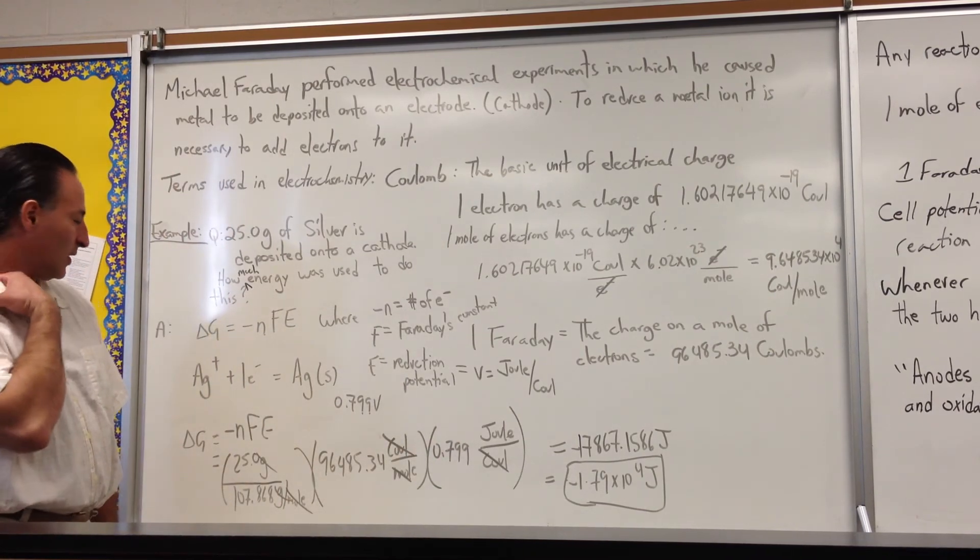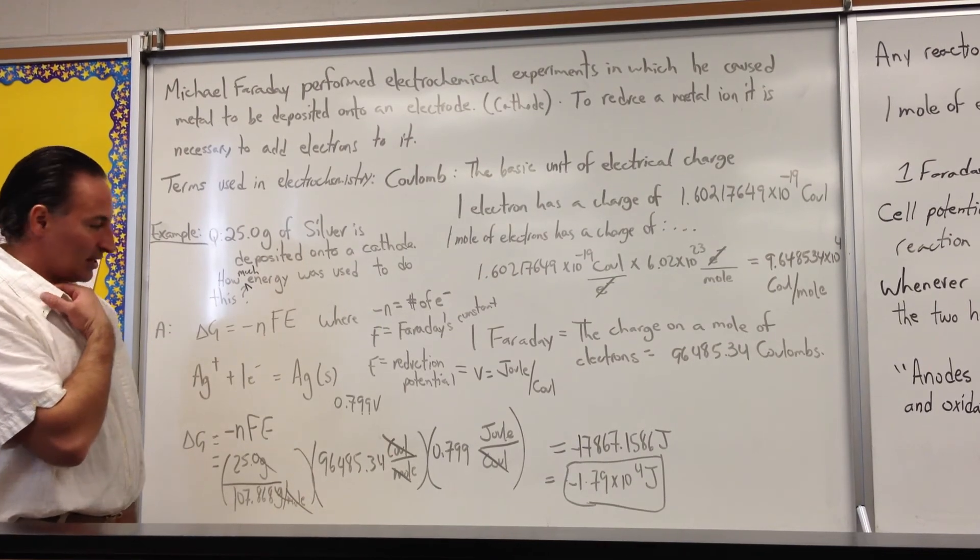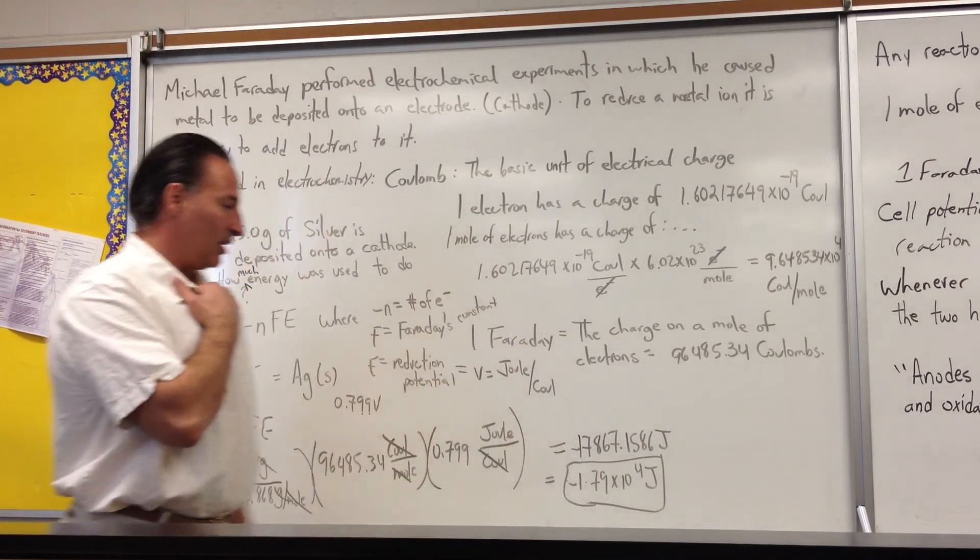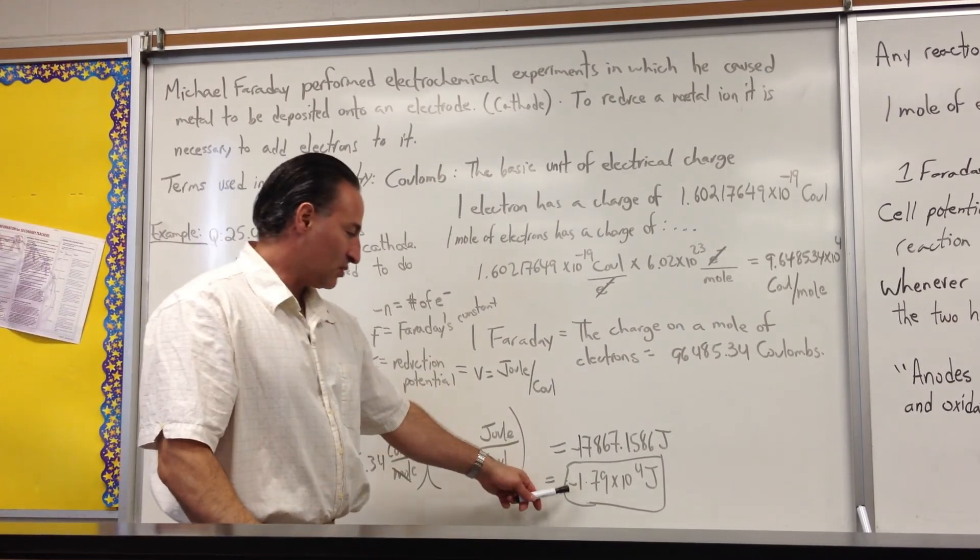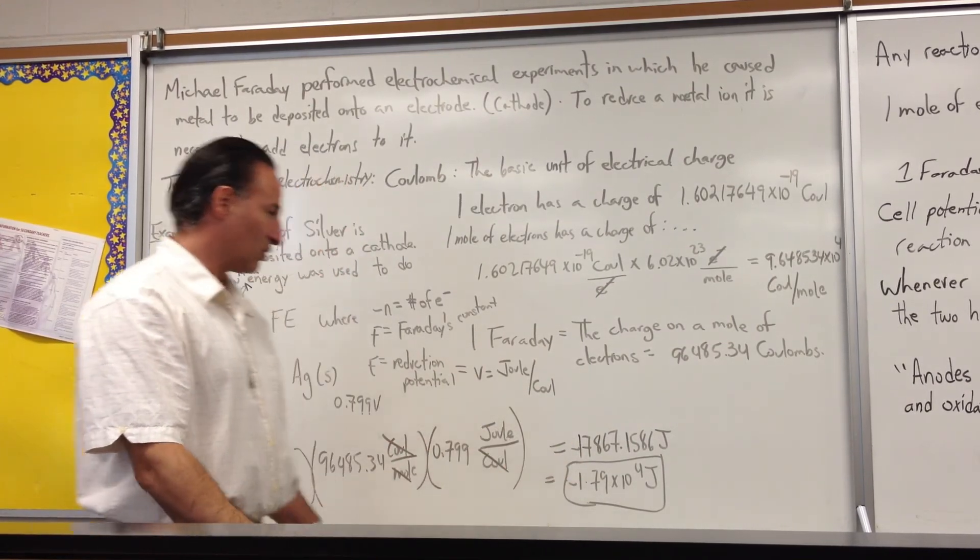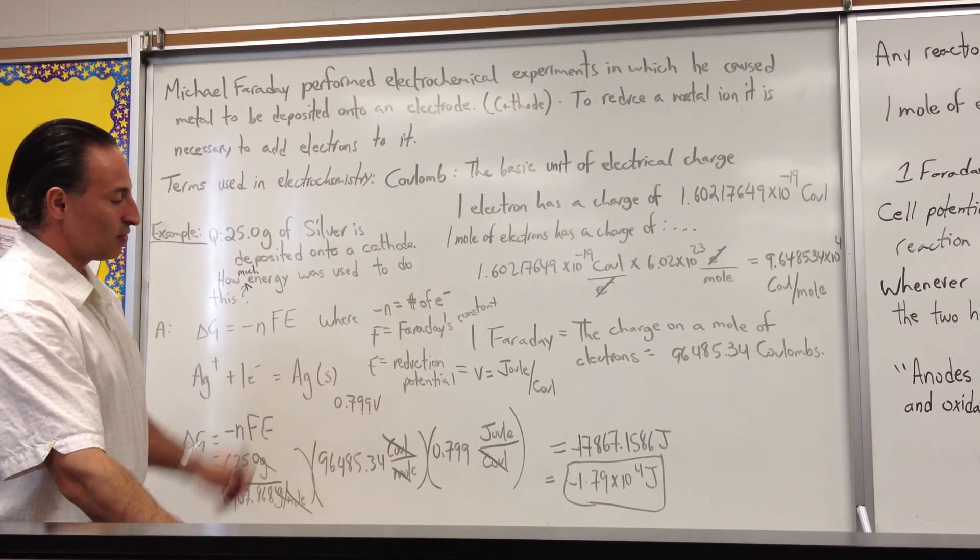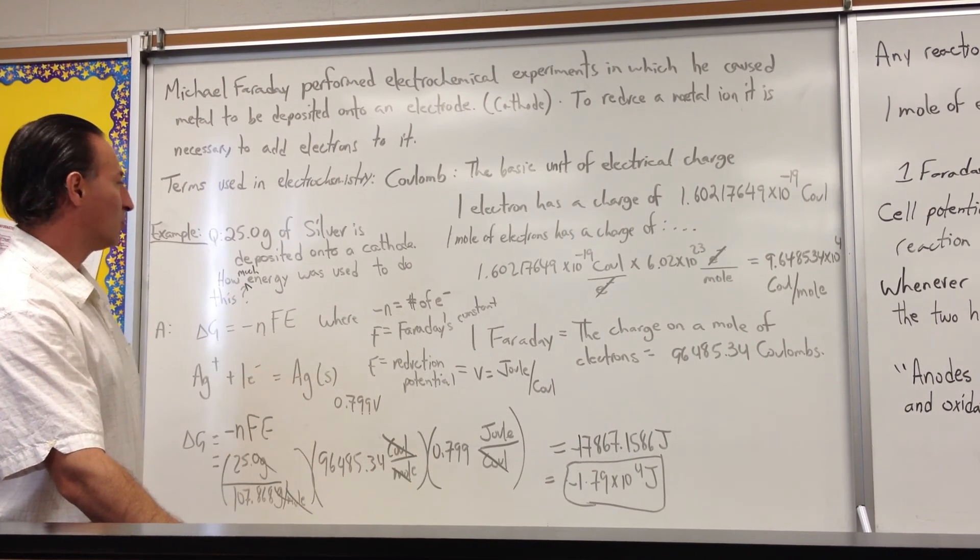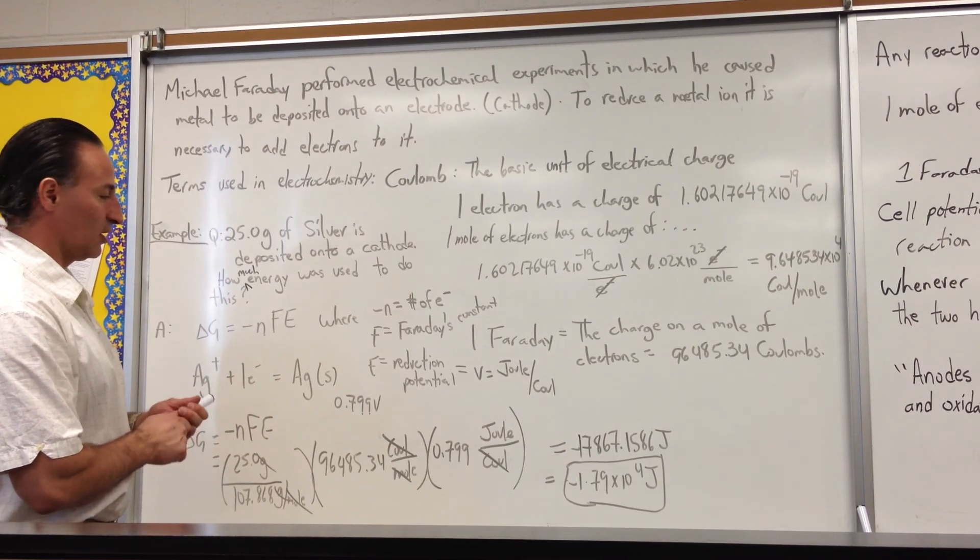That's the amount of energy that can be released by depositing that amount. Because it's negative, the free energy is available for doing work. In this case, 1.79 times 10 to the 4 joules of energy are available to do work if we deposit 25 grams of silver onto an electrode.